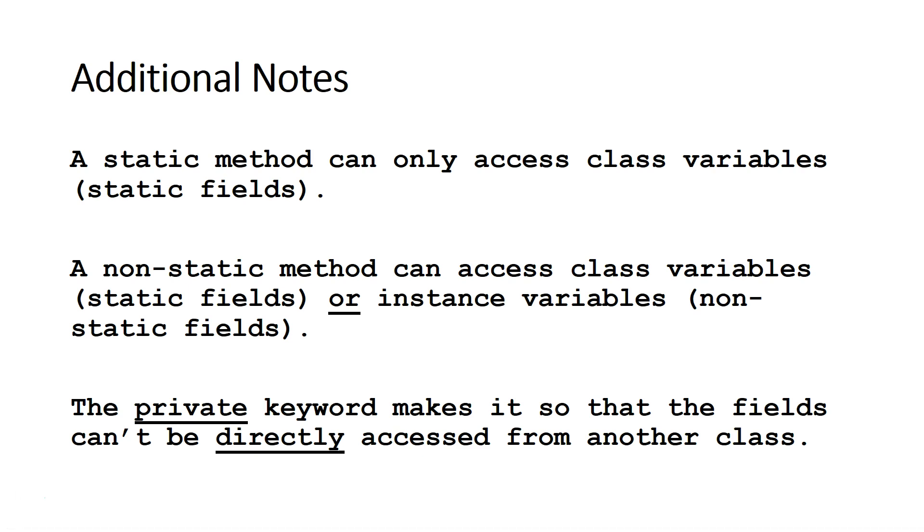So additional notes. A static method can only access class variables. A non-static method can access class variables or instance variables. And you notice we have the private keyword on our fields. What that does is that makes it so the fields can't directly be accessed by other classes. It helps us prevent bugs, and it also helps us get a top score on an AP free response question.